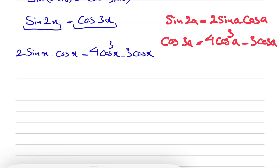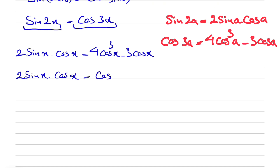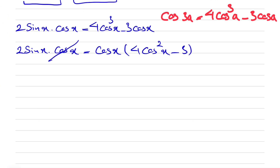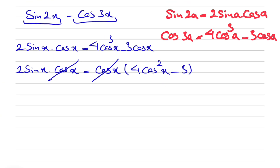On the right side we can factor out a cosine. So the left side is 2 sine of x times cosine of x, and on the right side we factor cosine of x to get cosine of x times (4 cosine squared of x minus 3). Now we can cancel the cosine of x on each side. We don't need to set it equal to zero because x is 18, not a variable.